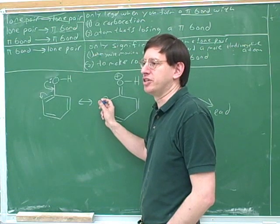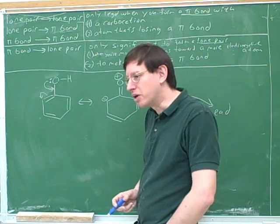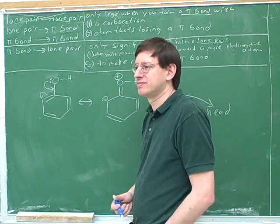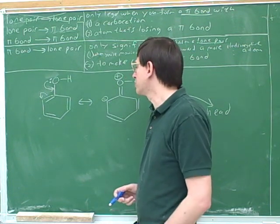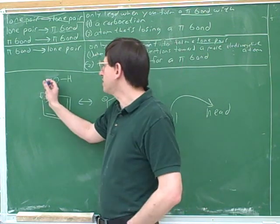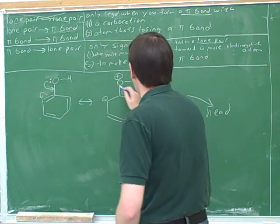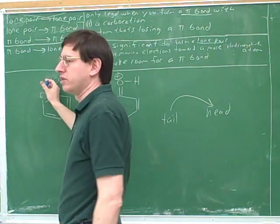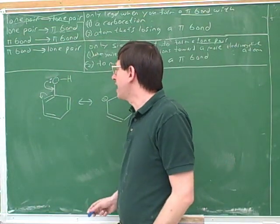I'm not going to draw the lone pair on this carbon because it's conventional not to draw lone pairs if they're represented by charges. Whether you draw them depends on the problem or your instructor's preference. The only lone pair you have to draw is the one where you need to place the tail of an arrow — the tail must be on either a negative charge or a lone pair.